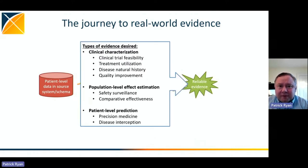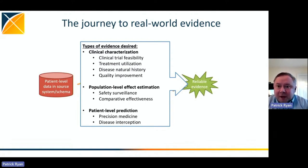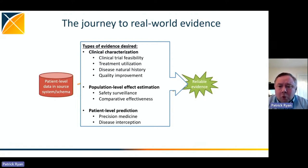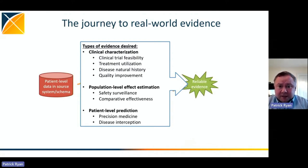Another aspect of the challenging journey to evidence is what type of evidence we're actually trying to generate. I'll classify these into three categories. First, clinical characterization — descriptive epidemiology to understand what's happened to a population, used for studying disease natural history, treatment utilization, and quality improvement. Second, patient-level prediction — applying machine learning algorithms to identify the probability a given individual experiences an outcome, used for precision medicine and disease interception. Third, population-level effect estimation — causal inference for understanding medical interventions, safety surveillance, and comparative effectiveness.